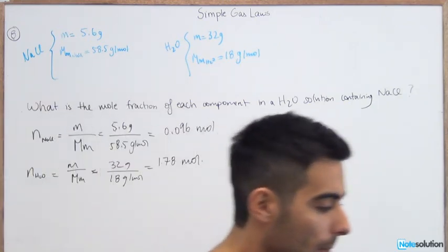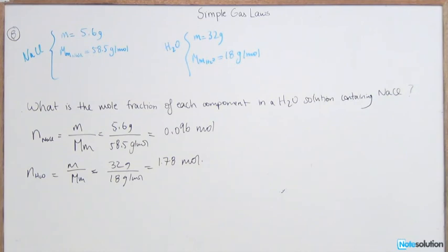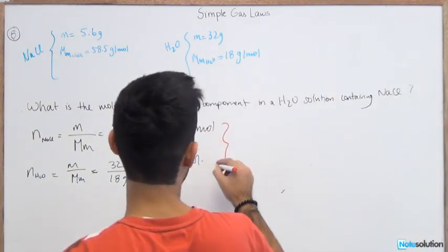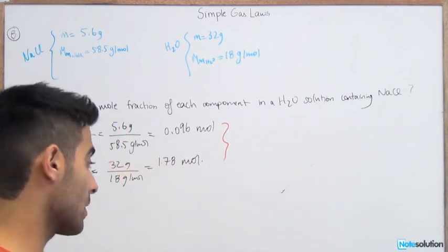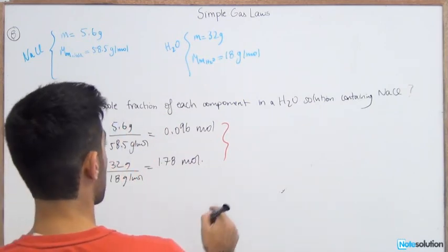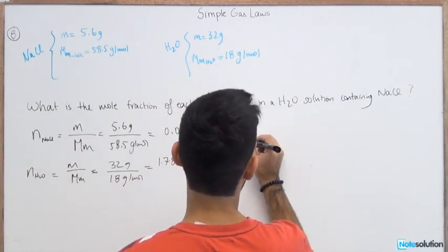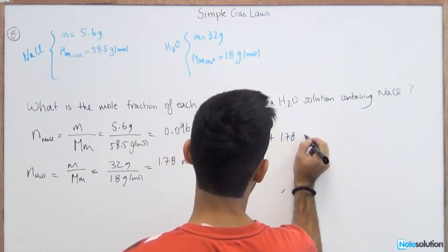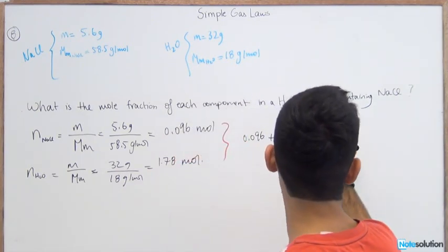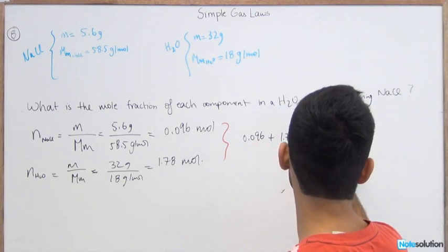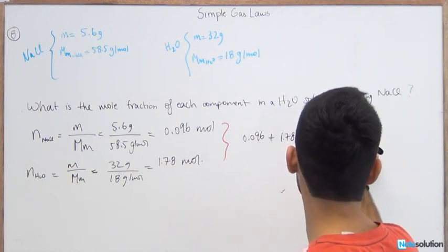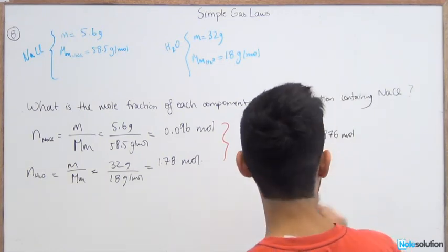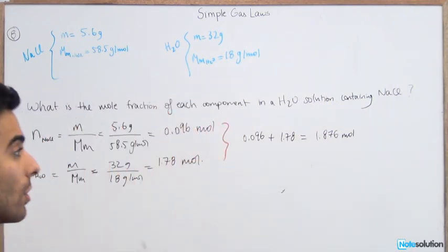The next step is to add up the total number of moles of all the components. So 0.096 plus 1.78 gives you 1.876 moles total for all the components in this solution.